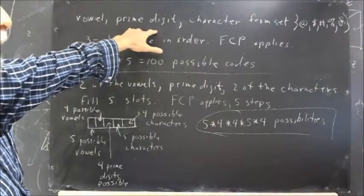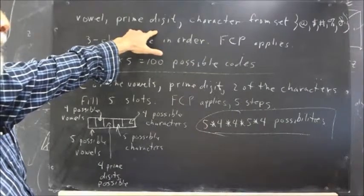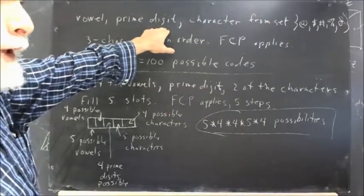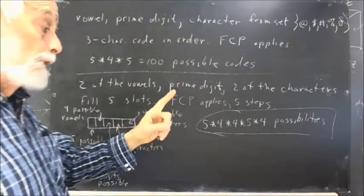Instead of a prime digit, we could have a digit less than 7, even digits, or odd digits. Let's be clear, the digits are the single-digit numbers: